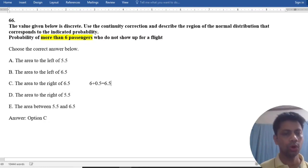The correct answer is more than 6 passengers by using continuity correction to describe the region of normal distribution that corresponds to the probability, which is 6.5.